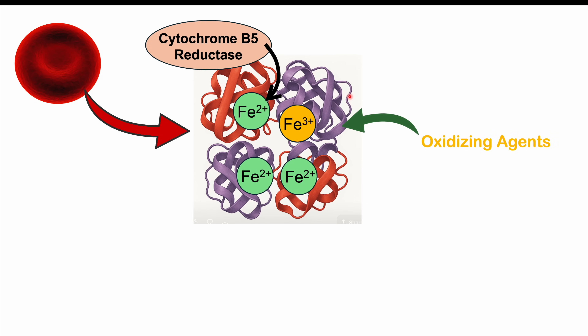In acquired forms, direct oxidizing agents such as benzocaine can lead to excessive oxidation of iron atoms, generating more Fe3+. In a healthy patient, cytochrome B5 reductase can deal with some of this oxidized iron. However, if there are too many oxidizing agents — like benzocaine or prilocaine — oxidation of iron atoms can occur faster than cytochrome B5 reductase can reduce them, leading to methemoglobinemia.